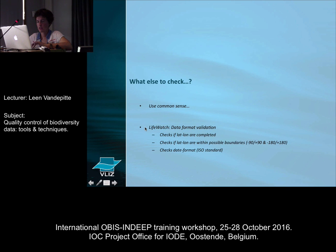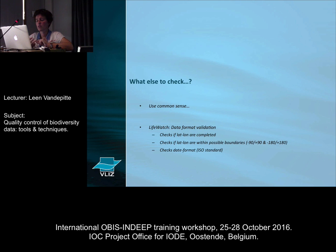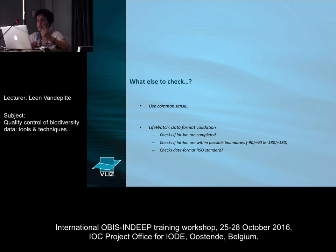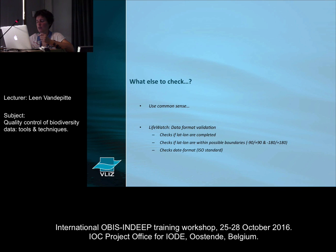One thing that we can still offer through LifeWatch is a data format validation service. This service does three things: it will check if your latitude and longitude fields are completed; it also checks whether the latitude and longitude are within the possible boundaries — meaning within the 90 and 180 boundaries for latitude and longitude. It does not check whether it's in the correct region, for that you would need the visual check. And for the dates, this tool also checks whether the dates are in the correct ISO format. That gives you a quick first look at the completeness and quality of your data set.